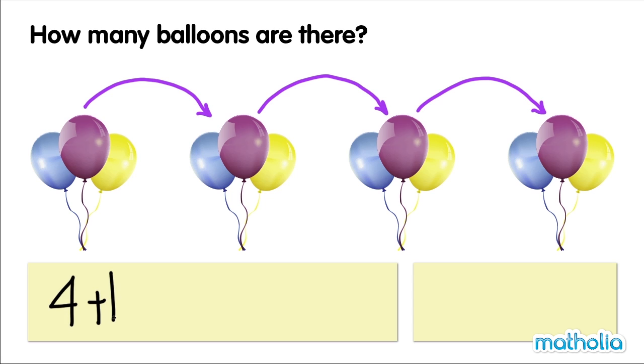Four threes equals twelve. Four times three equals twelve.